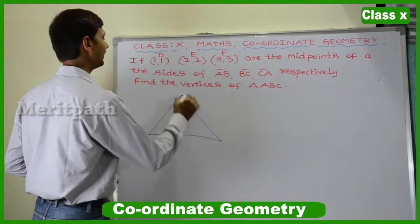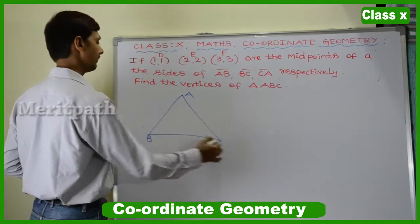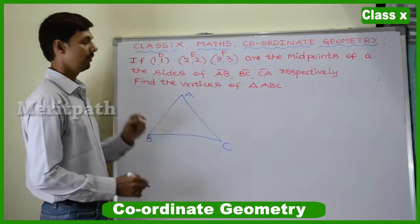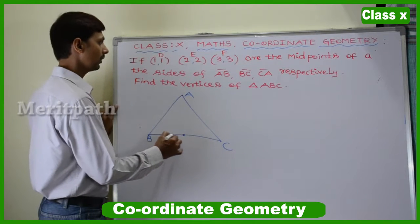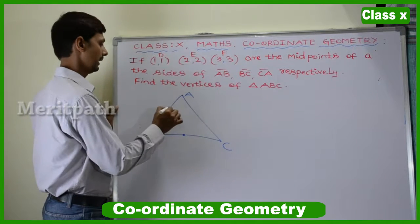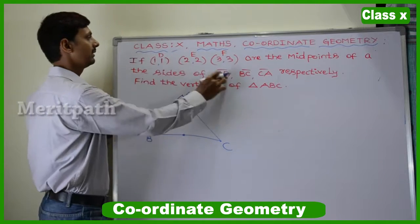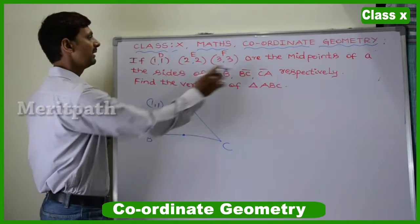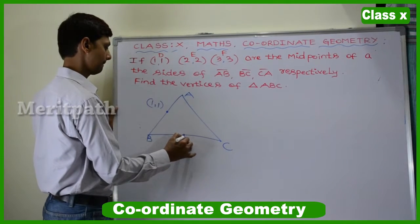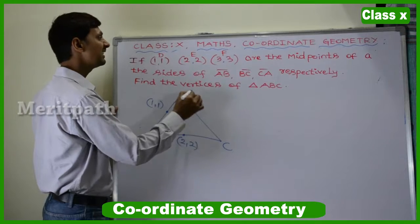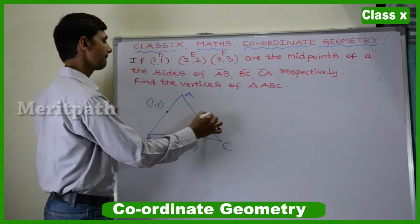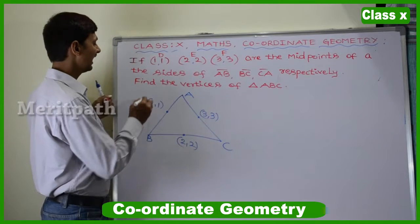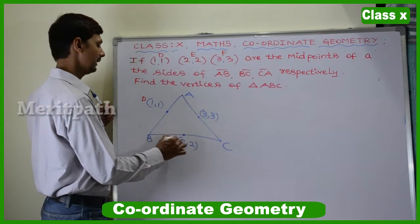It is given that ABC is a triangle and D, E, F are midpoints of the sides. The midpoint of AB is (1,1), the midpoint of BC is (2,2), and the midpoint of AC is (3,3), and these midpoints are named D, E, and F.